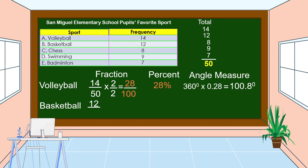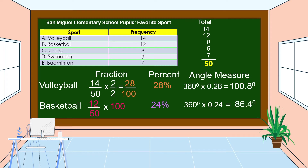For basketball, the frequency is 12 and the total respondents is 50. We divide 100 by 50 to get 2, then multiply 2 by 12 to get 24. So basketball represents 24%. Changing 24% to decimal gives 0.24. Then 360 degrees times 0.24 equals 86.4 degrees.